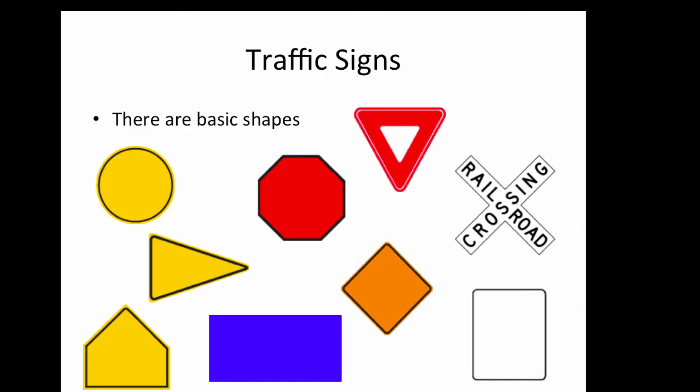First thing we want to know is that there's a lot of basic shapes here that are associated with our different traffic signals. We can see the round one tells us about railroad crossings.